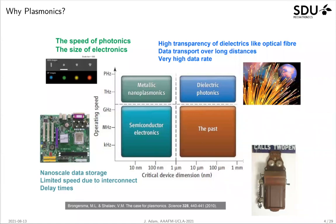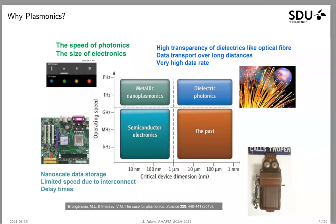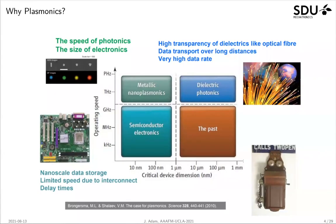So why are we looking at plasmonics in the first place? I'd like to show this very nice diagram of Bonga, Sma, and Shalaev, who dissected the critical device dimension versus the operating speed into four regions. One is the past, where you have low operating speeds and rather large device dimensions. Then if you keep the device dimensions high but the operating speeds higher, you end up in dielectric photonics.